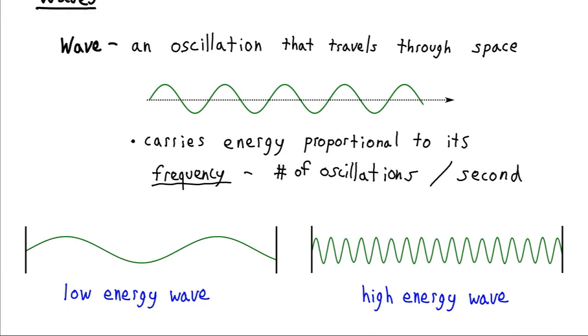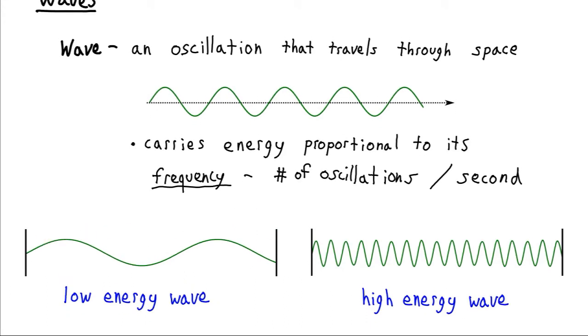So for example, this would be a low energy wave if it only has one oscillation, say this represents one second of time. And if we have lots of oscillations over that same second, that's going to be a much higher energy wave. So that would be the difference between high energy ultraviolet light and low energy infrared light.